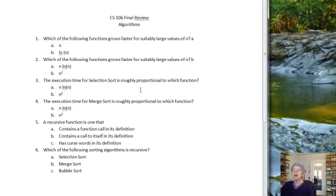The execution time for selection sort is roughly proportional to which function: n log n or n squared? Well, remember with selection sort we're basically looking at something that looks like n plus n minus 1 plus n minus 2 plus dot dot dot down to 1. Something of that form is going to have a formula that's proportional roughly to n squared. So that's answer b.